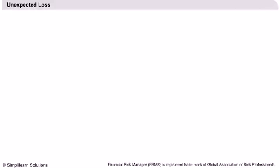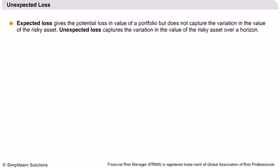Unexpected loss. In an earlier session, we learned about expected loss, which gives the potential loss in value of a portfolio, but does not capture the variation in the value of the risky asset. This means that while most assets do not default, the asset that defaults results in a huge loss not captured by expected loss — the actual loss can be much larger. The measure of this situation is called unexpected loss; it captures the variation in the value of the risky asset over a horizon.